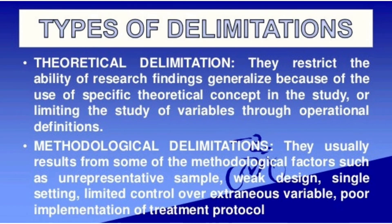Types of delimitation: theoretical delimitation and methodological delimitation. In theoretical delimitation, they restrict the ability to generalize research findings because of the use of specific theoretical concepts. These can be set through operational definitions, which are dealt with in the first chapter.